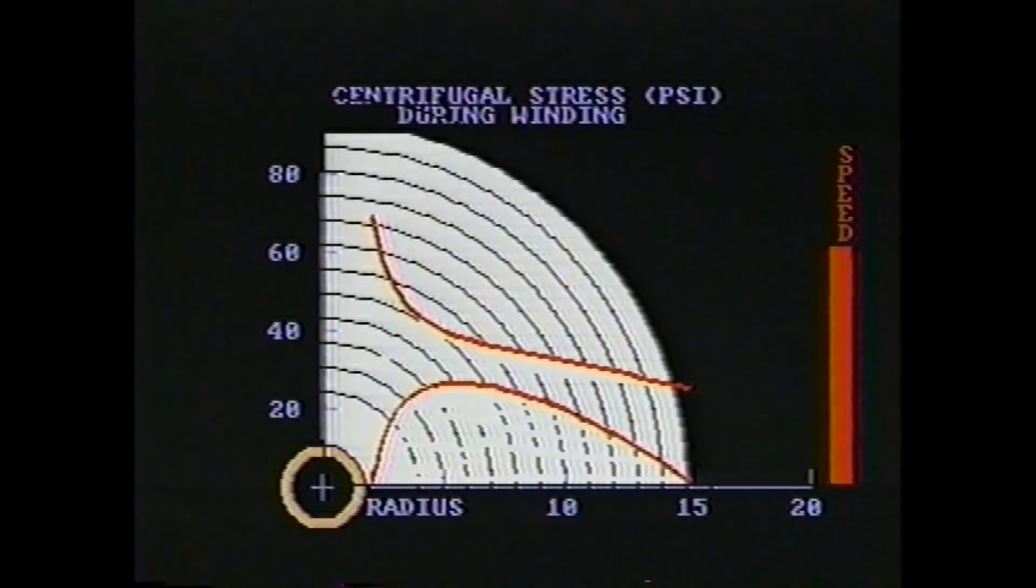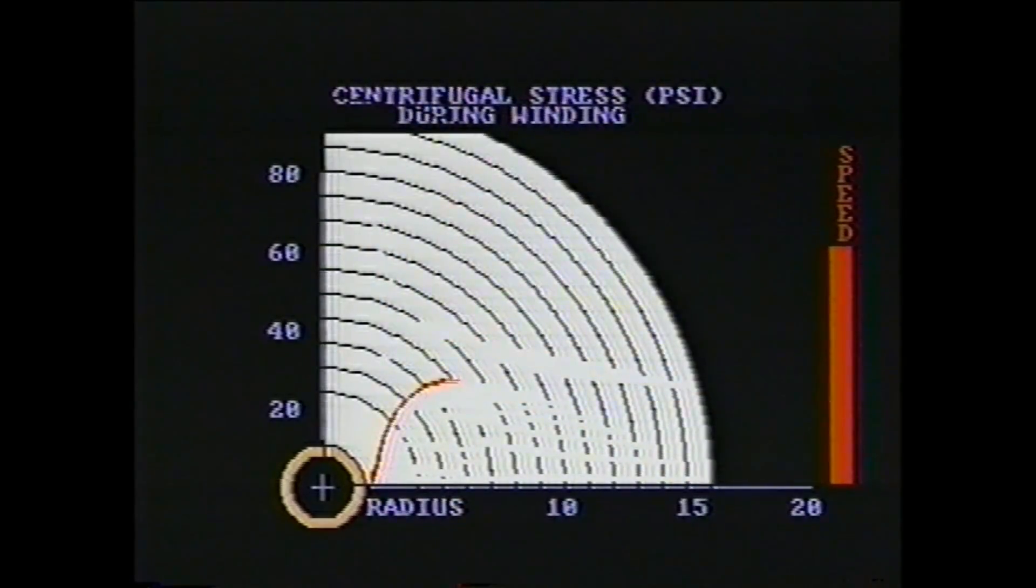What this means is that there is an upper limit to the speed of a winder beyond which the paper roll will have no interlayer radial pressure and it will lose its structure entirely.